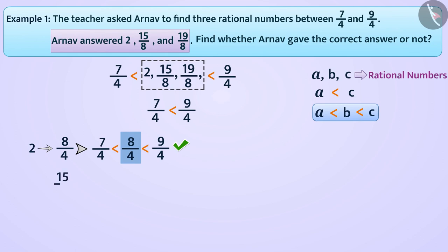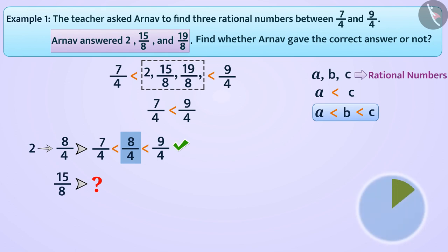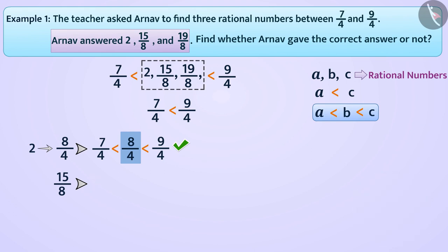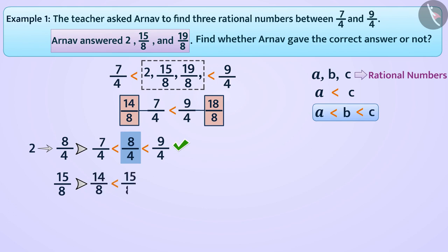Is 15 by 8 also a rational number between these two rational numbers? Think! Absolutely true! If we write 7 by 4 as 14 by 8 and 9 by 4 as 18 by 8, then we know that 14 by 8 is less than 15 by 8 is less than 18 by 8. Therefore, 15 by 8 is also a rational number between 7 by 4 and 9 by 4.